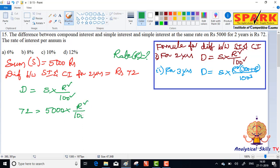r square by 100 square. So next step: 72 is equal to 5000 into r square by 100 into 100.